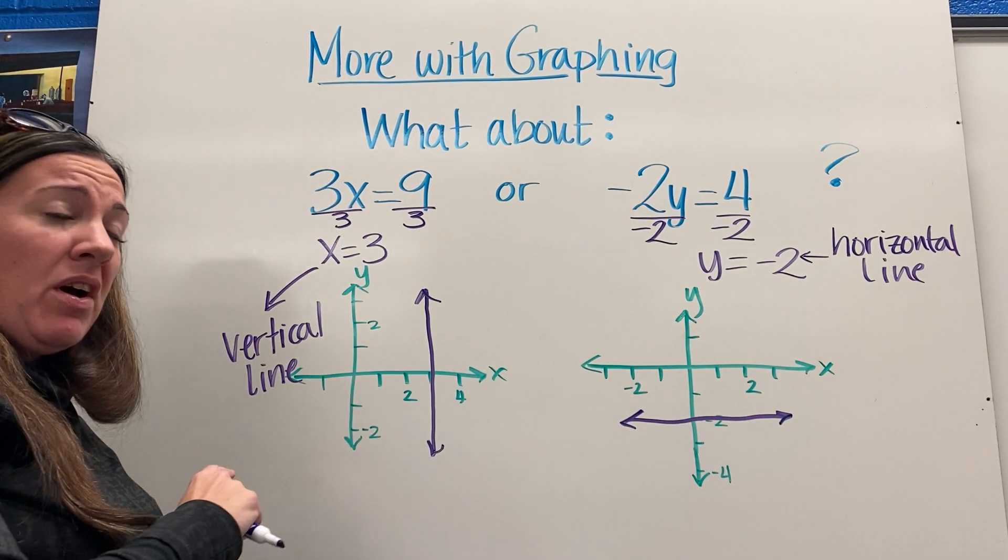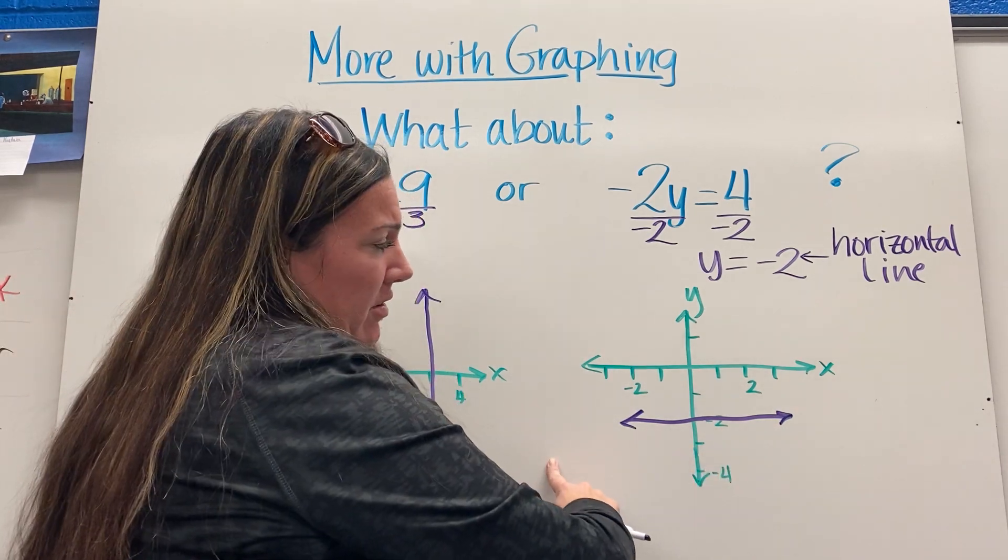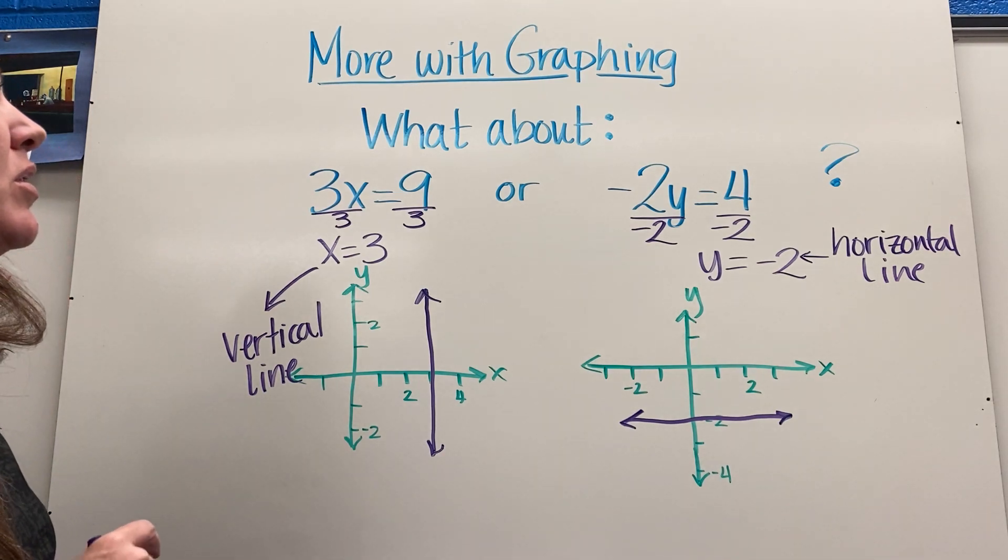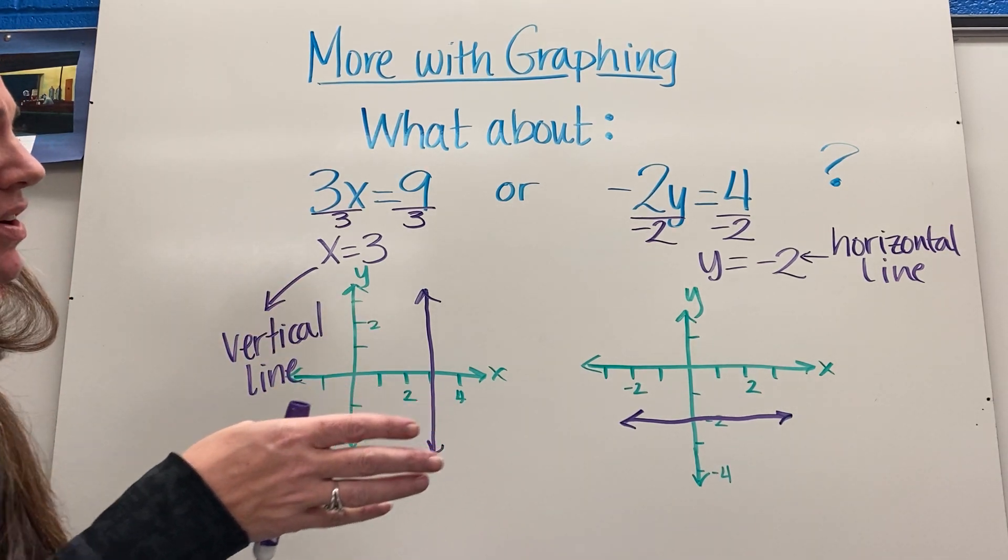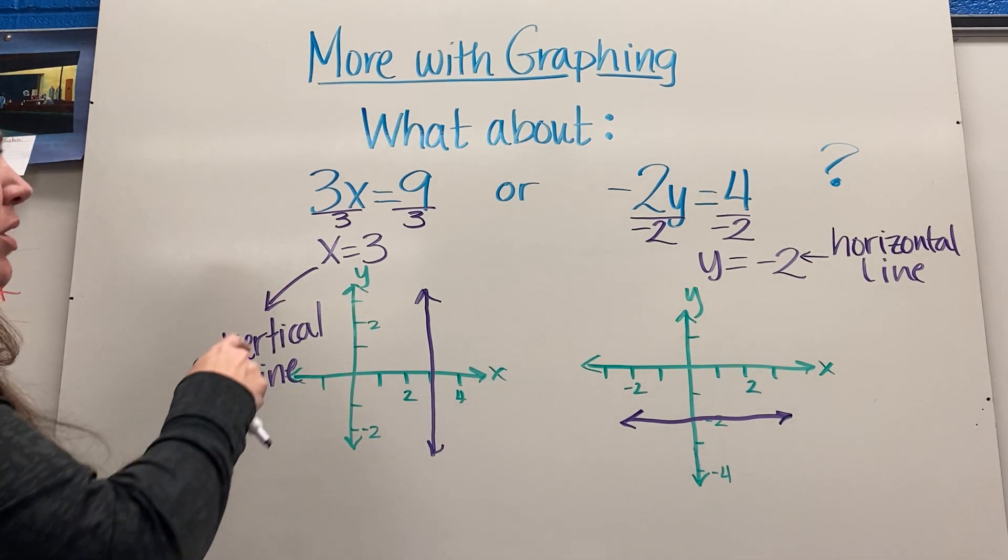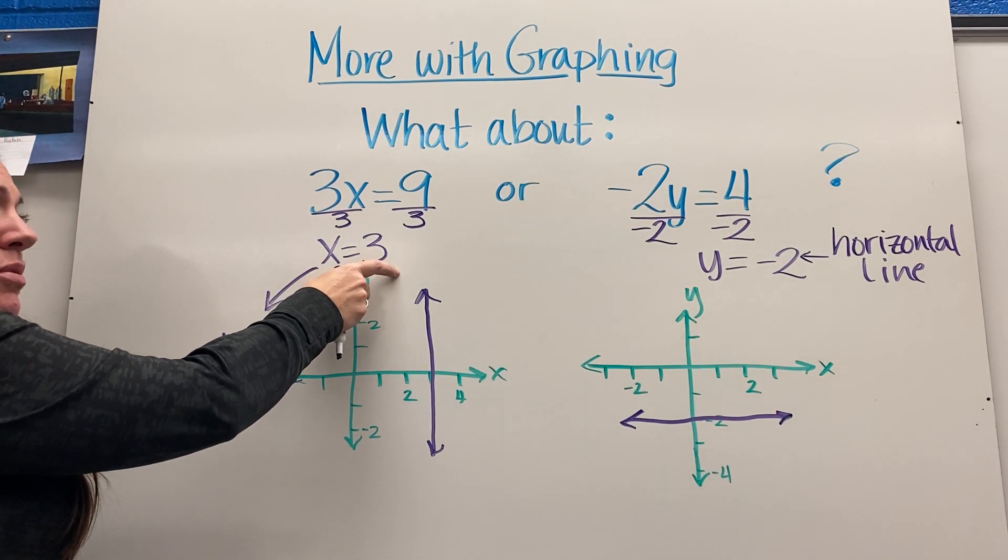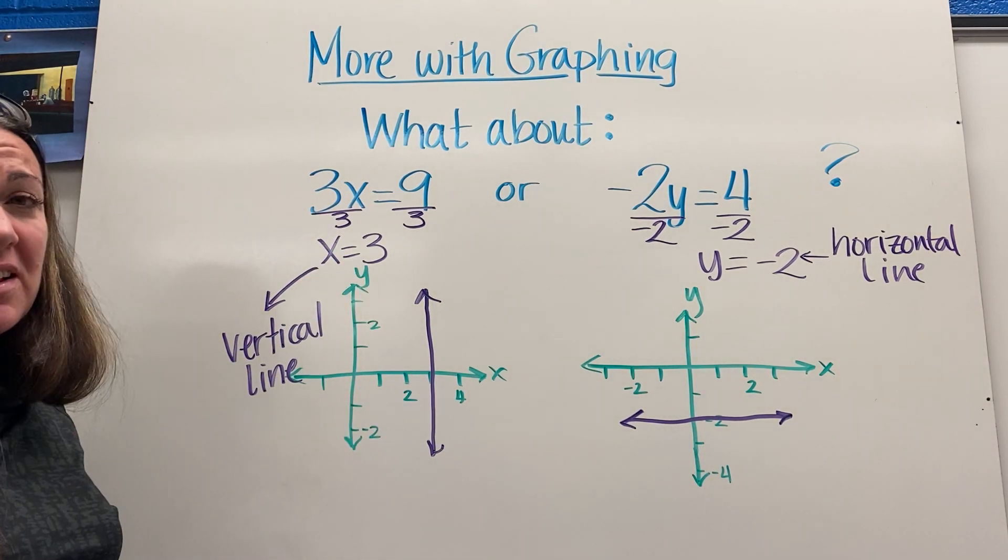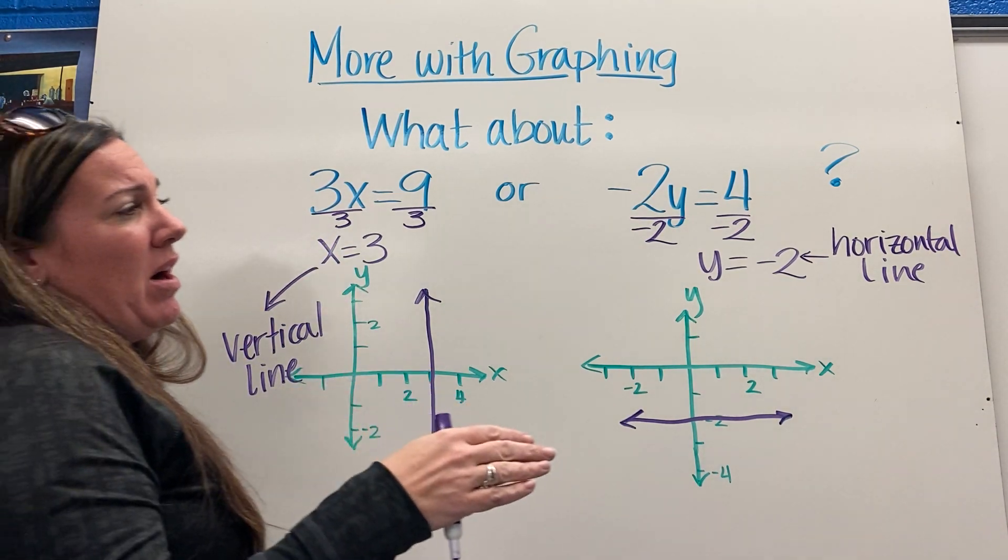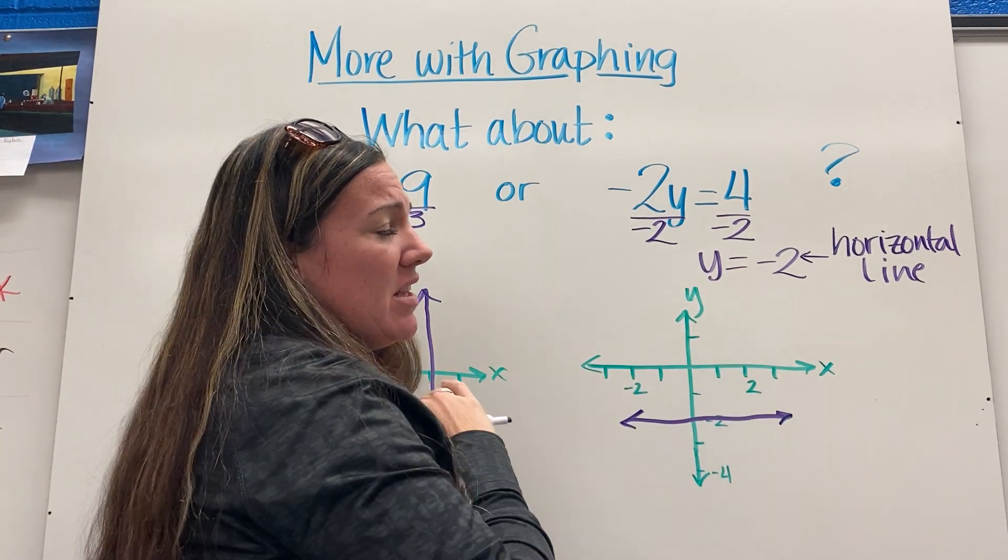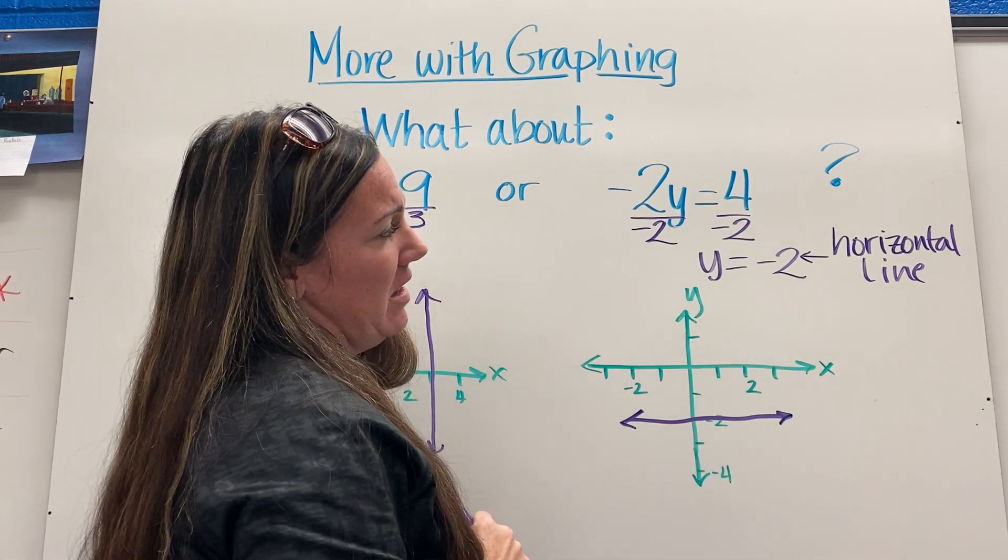Again, whatever's going on here, y is always equal to negative 2, so if I were to pull any ordered pairs from this line, the y value would always be negative 2. When you simplify and you get it to where it's just one variable equaling one number, if it's an x, that's a vertical line at that number. If it's a y that's equal to just a certain value, it's a horizontal line at that number.